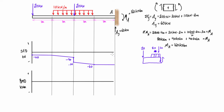We end up with minus 60 kilonewtons across that flat section. To check, we draw a free body diagram from the right-hand side, taking a virtual cut just to the left of the support. We know Ay is pressing up at 60 kilonewtons, so the shear must be pressing down at 60 kilonewtons. To the left of a cut, a downward-pointing shear arrow means a negative value, so this is negative 60 kilonewtons — exactly what we calculated. The shear force diagram is correct.